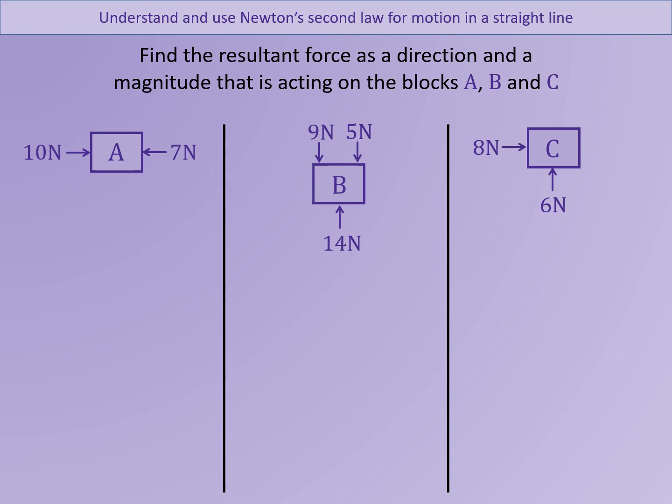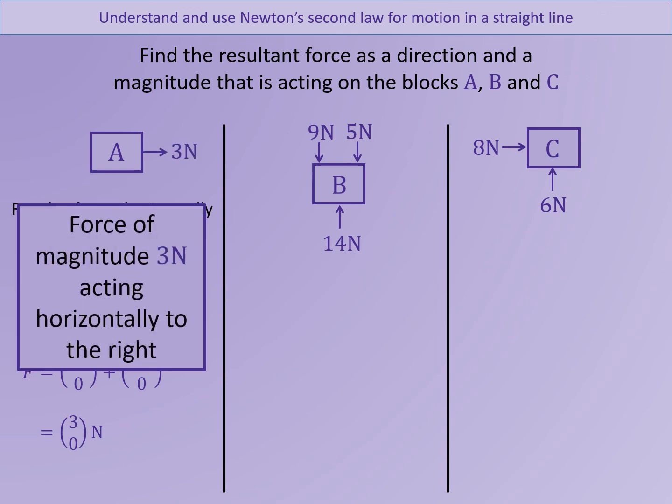We're now going to consider each of these three situations and find the resultant force and the magnitude on each of these blocks. Remember, the resultant force just means the overall effects of all of the forces combined. So in the first situation, resolving horizontally. So considering the forces in the horizontal direction. We're going to consider right as positive and left as negative. So the force is ten minus seven, which is three newtons. If we were going to use vectors, we could consider this as ten zero plus negative seven zero, giving as a resultant force of three zero. In other words, three newtons in the x direction. If we were going to give the force here, we would need to give a direction. So our answer would be a magnitude of three newtons horizontally to the right.